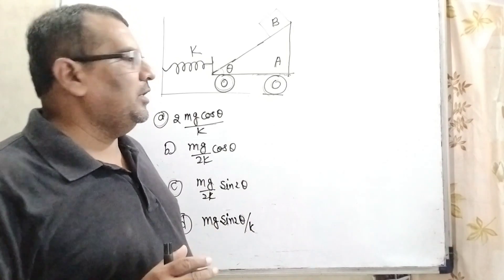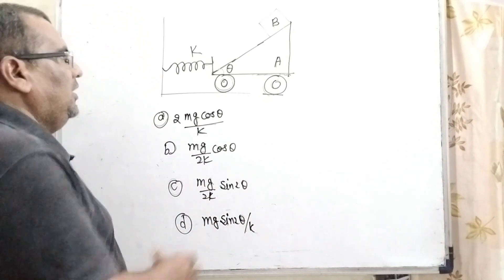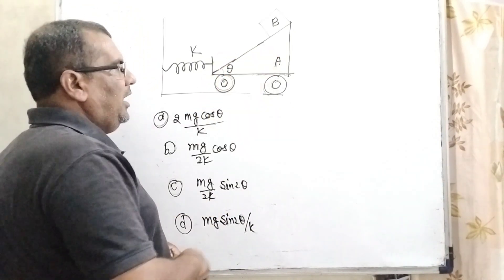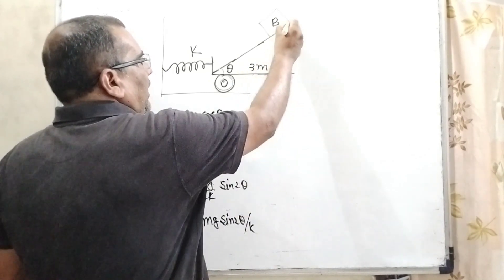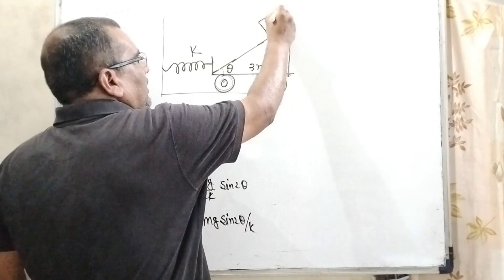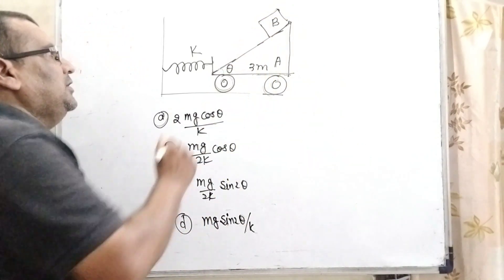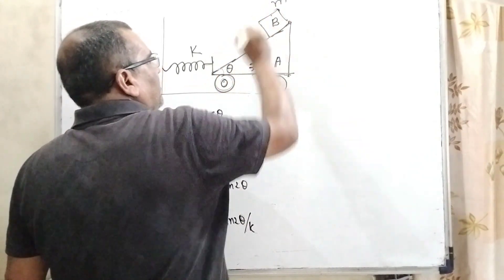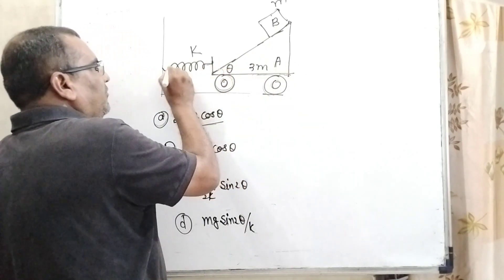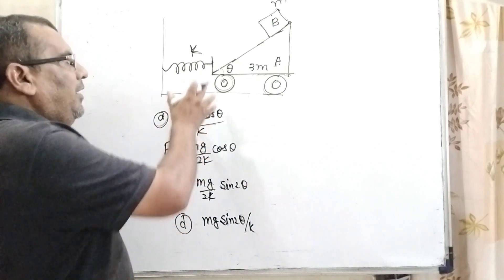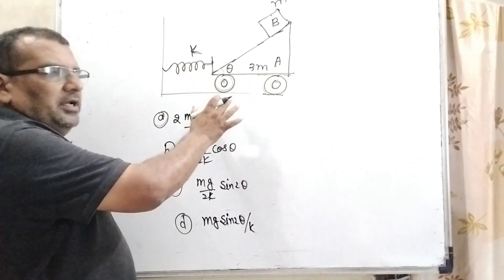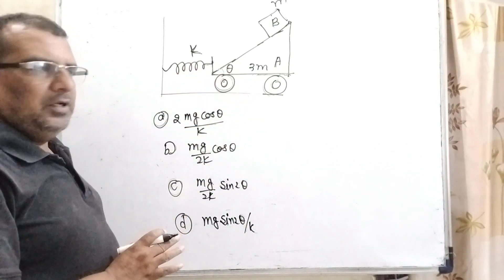Let us first understand what the question says. Here we have given wedge A and its mass is 3M. And block B which is kept over it, and its mass is M. The whole system is connected with this 3M wedge and a spring with constant K. Here we have to find out the extension of the spring.